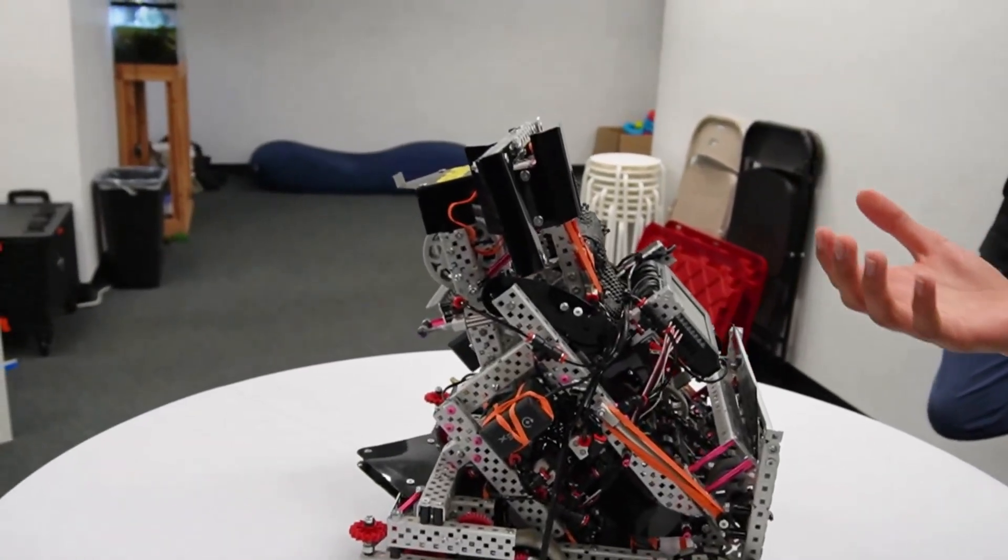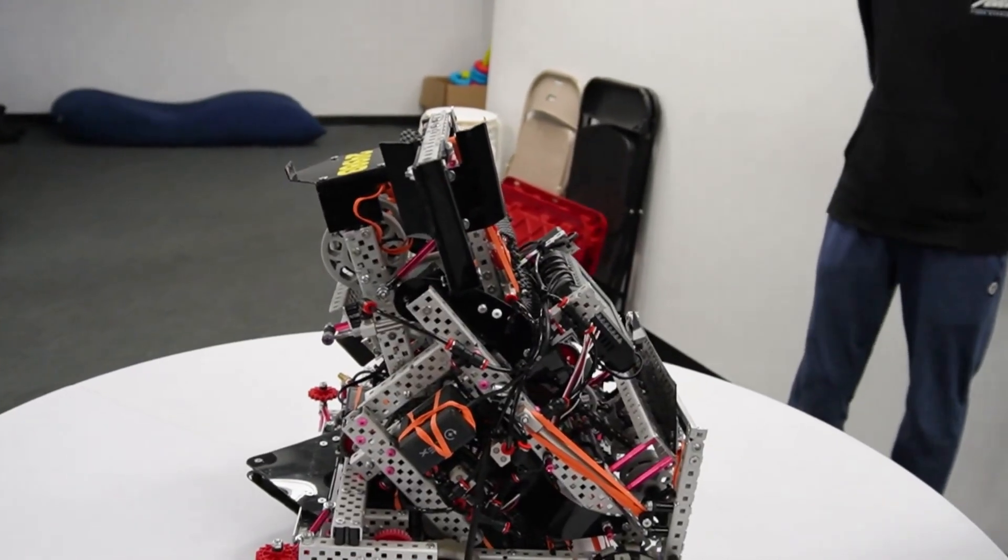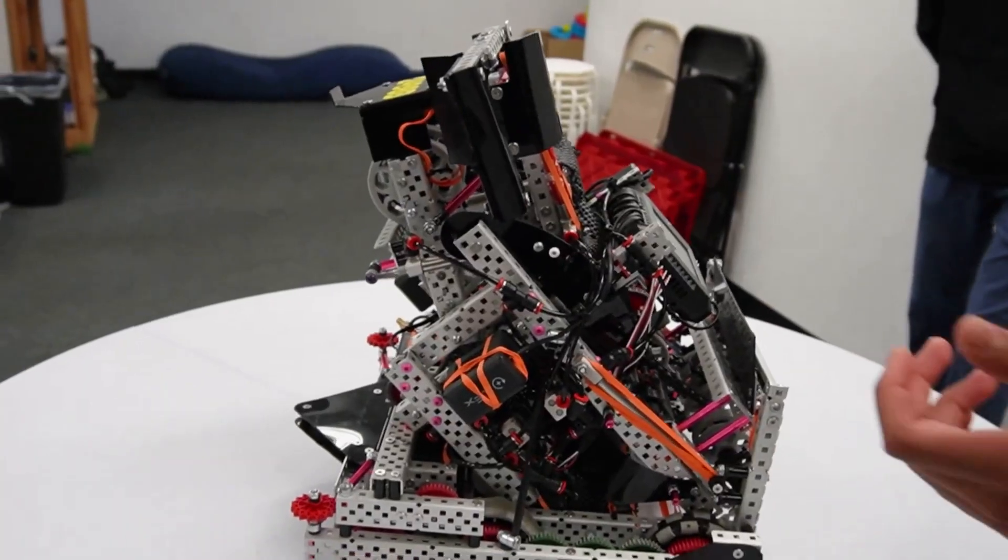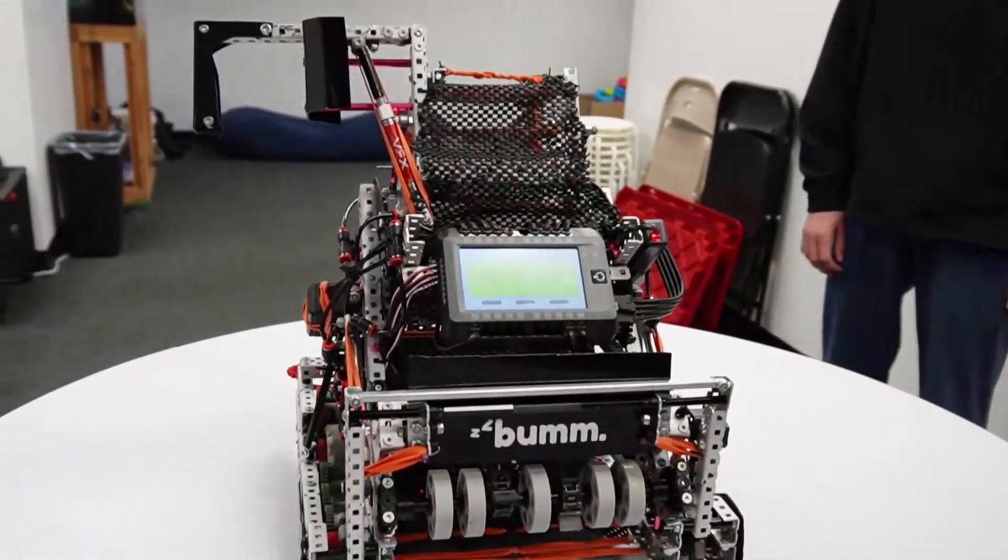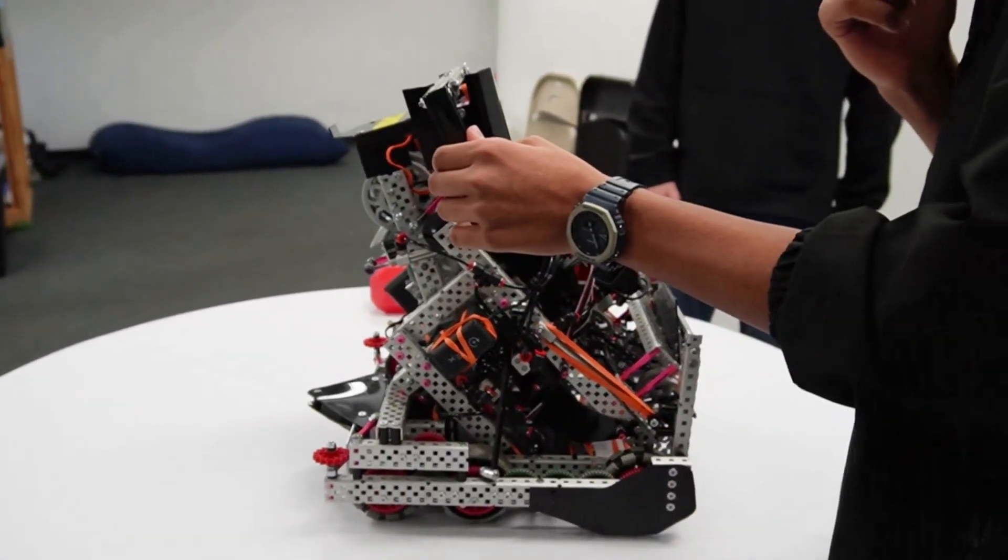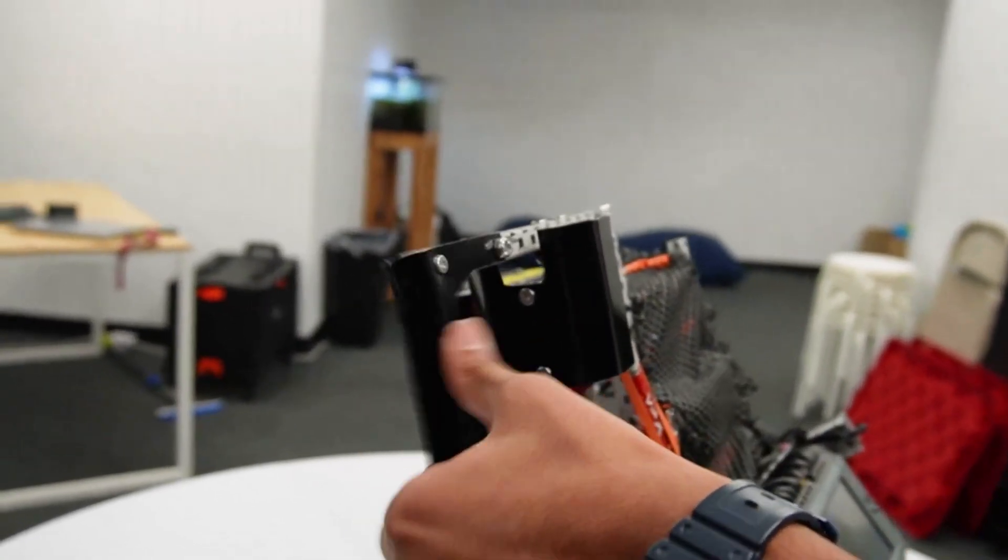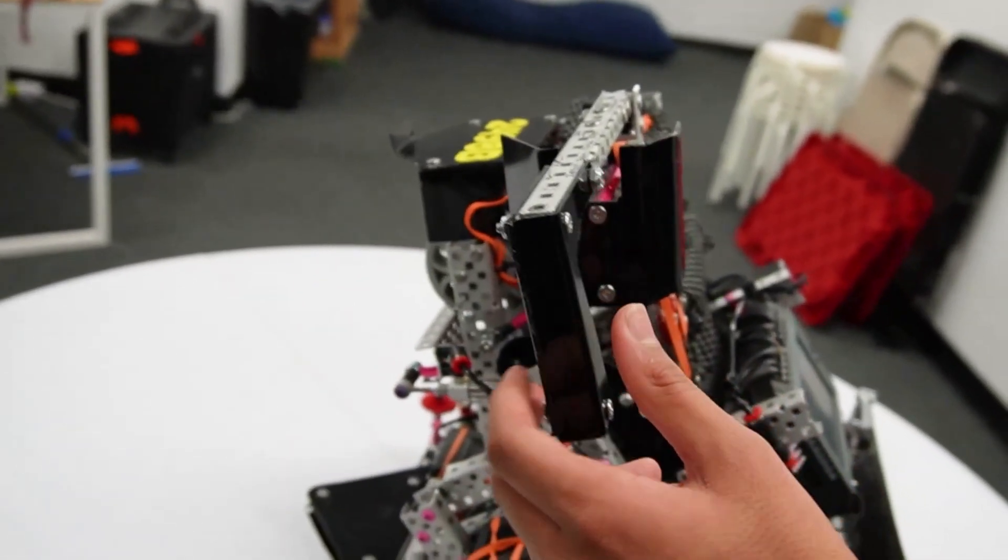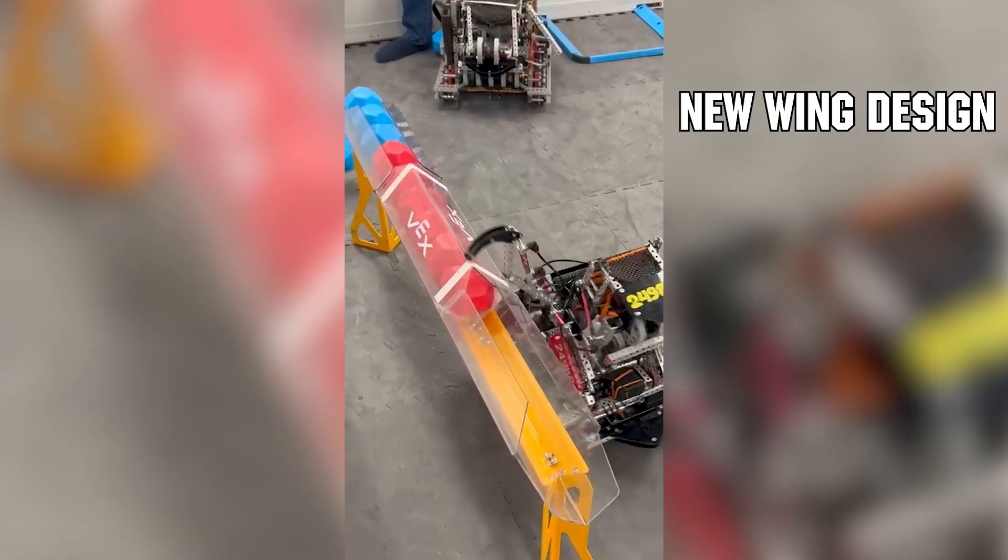One way we wanted to implement this polycarbonate wing is that when the balls are being pushed back into the wing and all of a sudden the other team on the other side releases pressure, it kind of flings back and that gives us that little bit of an extra push. We really want to implement this fling of our wing after the tension is released to gain us that advantage and hopefully control zone during matches.